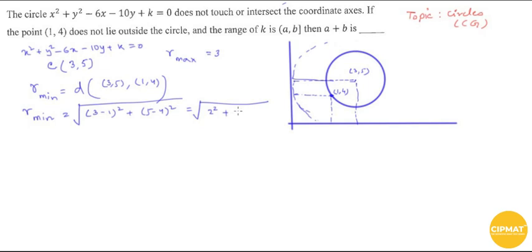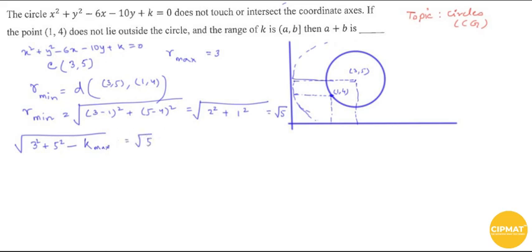That gives √(4 + 1) = √5. Now r_min = √(g² + f² - k) = √(9 + 25 - k) = √5. For r to be minimum, k must be maximum. So k_max = 9 + 25 - 5 = 29. Therefore b = 29.